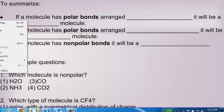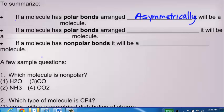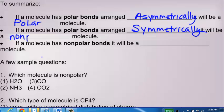So, to summarize, if a molecule has polar bonds arranged asymmetrically, it will be a polar molecule. However, if it has polar bonds arranged symmetrically, it will be a nonpolar molecule. And if it has nonpolar bonds, it's automatically, you don't even need to look at shape, it's automatically a nonpolar molecule.